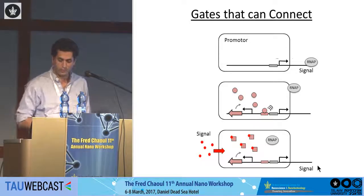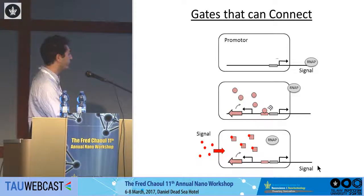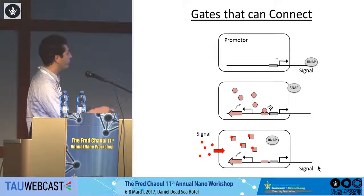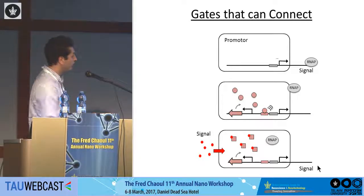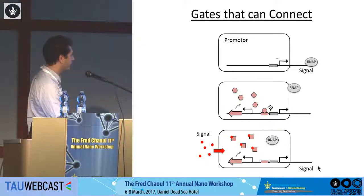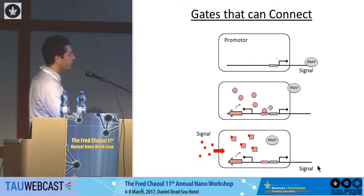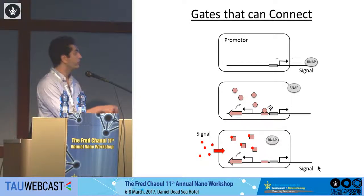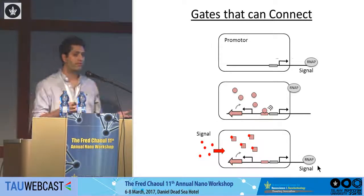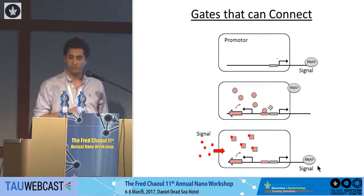If we induce the cell with a signal from the outside, small molecules can bind to this repressor peptide and prevent it from binding to the DNA, meaning the RNA polymerase is activated. In this simple way, we can just activate or deactivate genes using external stimuli.